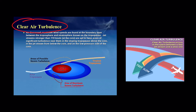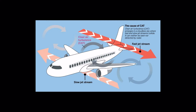Now let's talk about a phenomenon observed with jet streams known as clear air turbulence. Clear air turbulence is the turbulent movement of air masses in the absence of any visual clues such as clouds. It is caused when bodies of air moving at different speeds meet — one air mass is faster and the other is slower. Clear air turbulence occurs in the space between these two air masses and is caused by the vertical and horizontal wind shears of jet streams.